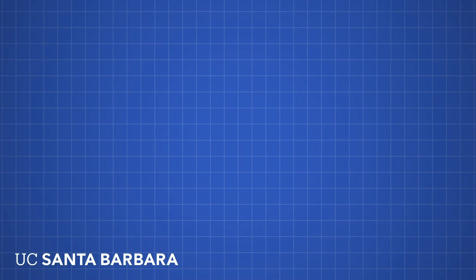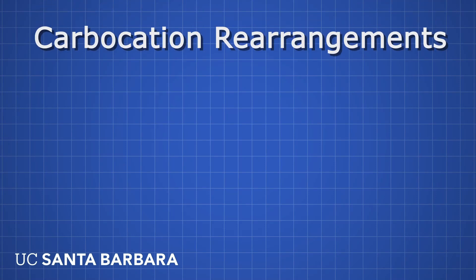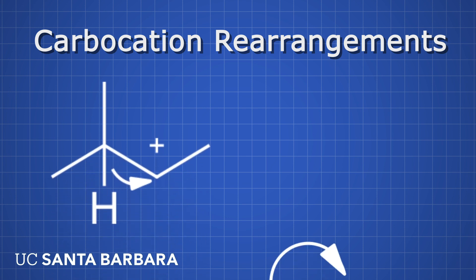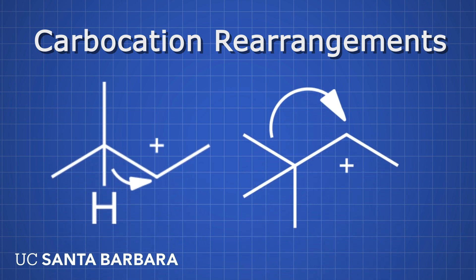Hello everyone. In this tutorial we're going to be covering some common carbocation rearrangements, mainly 1,2-hydride shifts and 1,2-methyl shifts. But before we get started, it's important to remind ourselves that carbocations are very unstable on their own, and in fact certain carbocations are more unstable than others. Let's first investigate this phenomenon before we can fully understand what's going on in a 1,2-hydride shift or a 1,2-methyl shift.